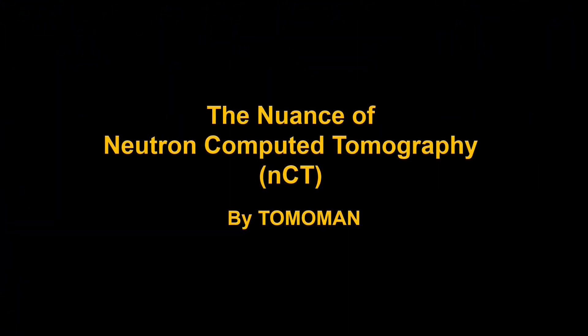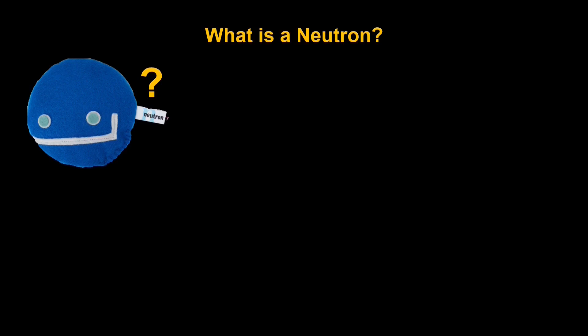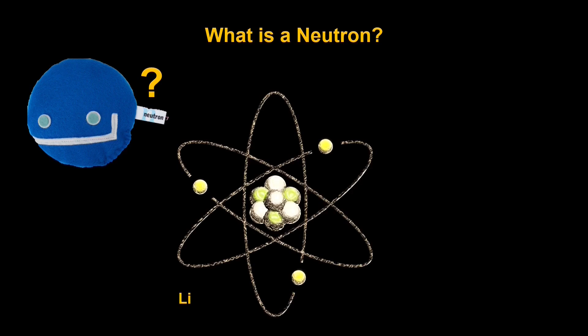So let's discuss the nuances of neutron imaging and neutron computed tomography. First, I'd like to start off with what is a neutron? And to understand the neutron, we have to look back on the atom. This for example is a lithium atom. A lithium atom has 3 protons and 3 electrons to keep it charged neutral. As well as these subatomic particles, we also have neutrons.